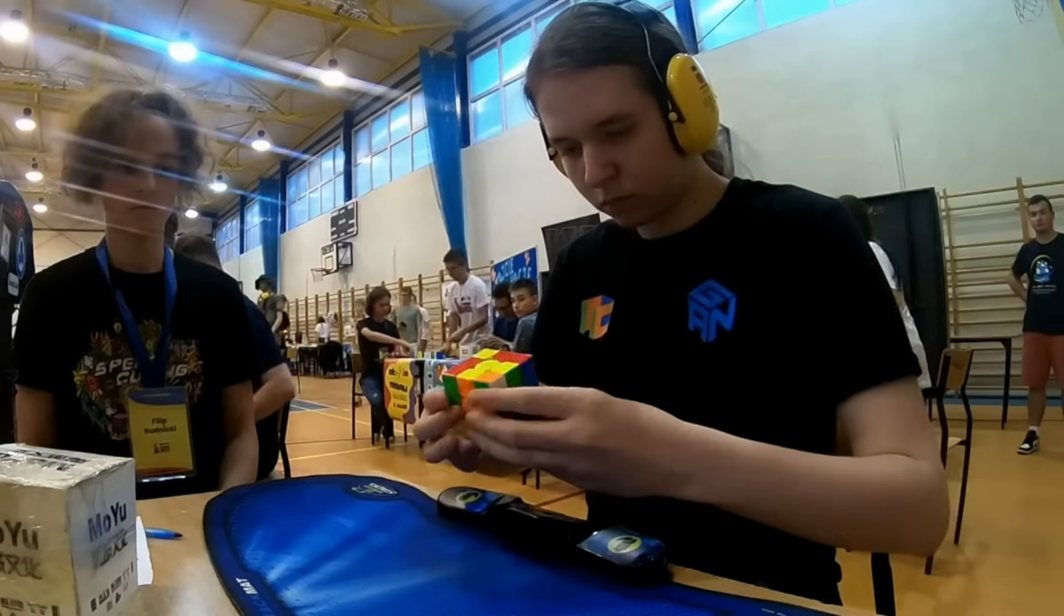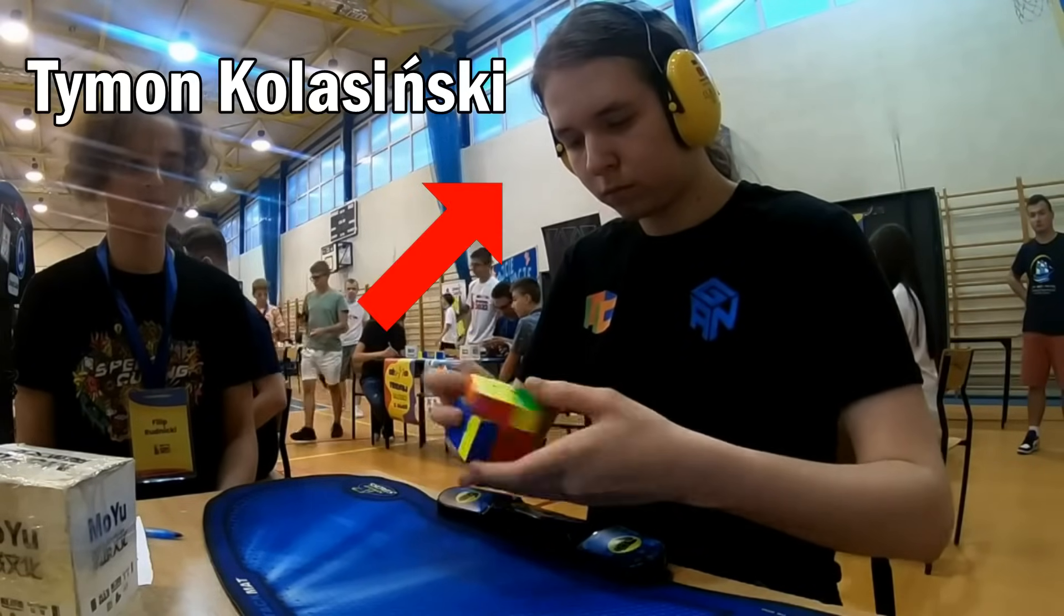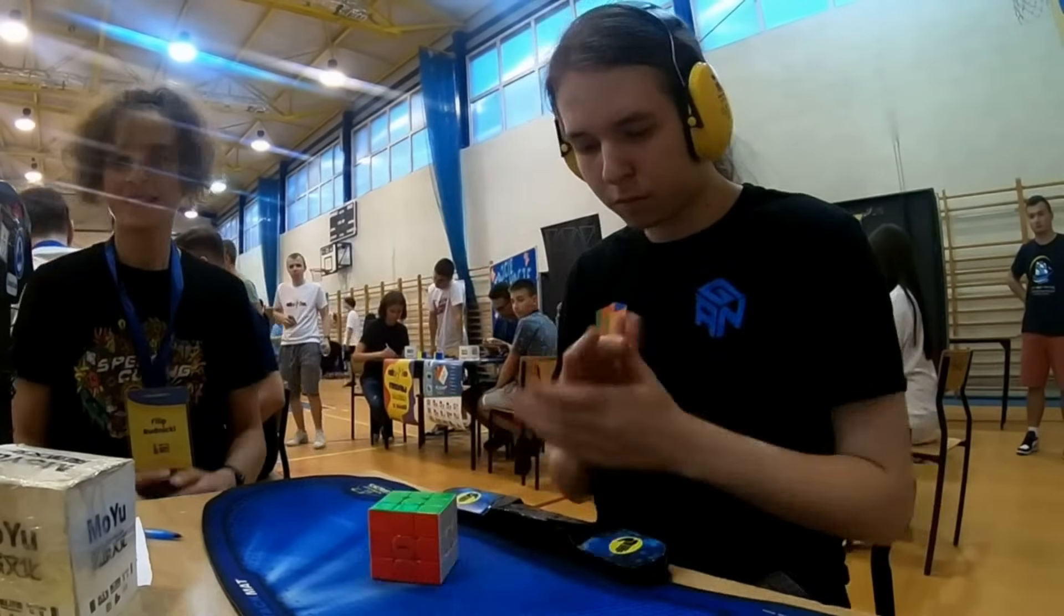Pseudo-slotting is a method of solving multiple F2L pairs at once. Many top cubers are using this nowadays, most notably Timon Kolesinski, who has the world record average.